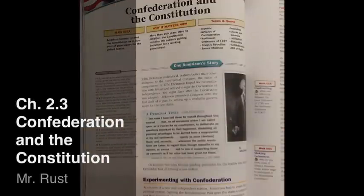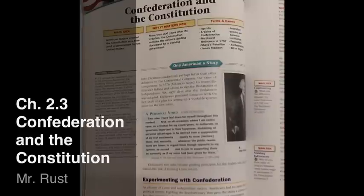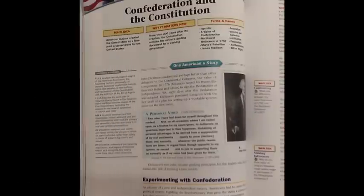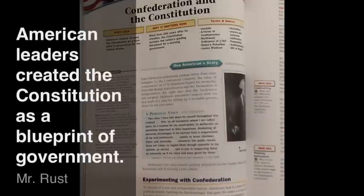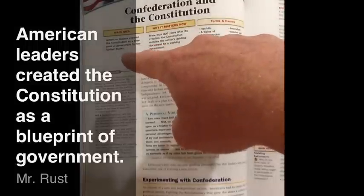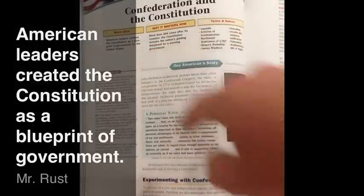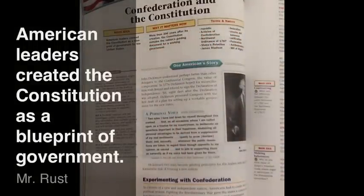This is Chapter 2.3 of The Americans, Confederation and the Constitution. Open your book to page 66 and follow along while I lead you through it. On page 66, you will see the main idea of this section, which is: American leaders created the Constitution as a blueprint for the new government of the United States.